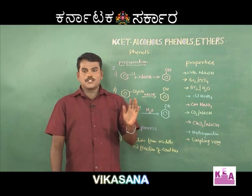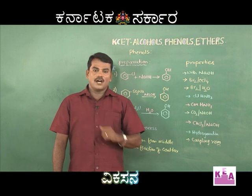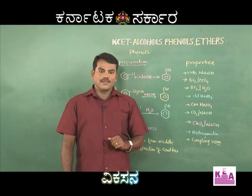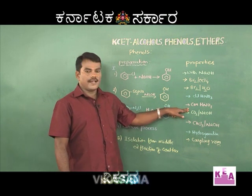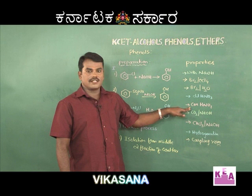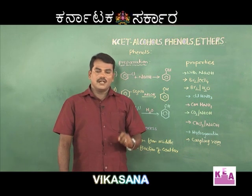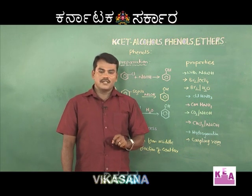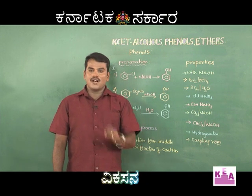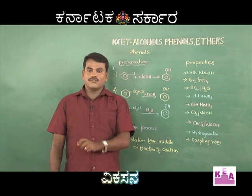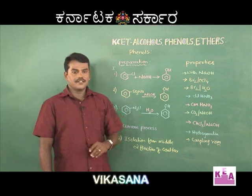Therefore, all substitution products of phenol will be ortho and para derivatives. The next reaction is reaction with concentrated nitric acid, where you get the very important product 2,4,6-trinitrophenol, which is commonly called picric acid.